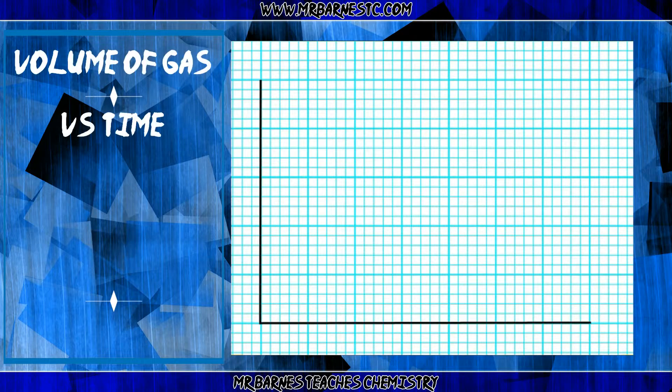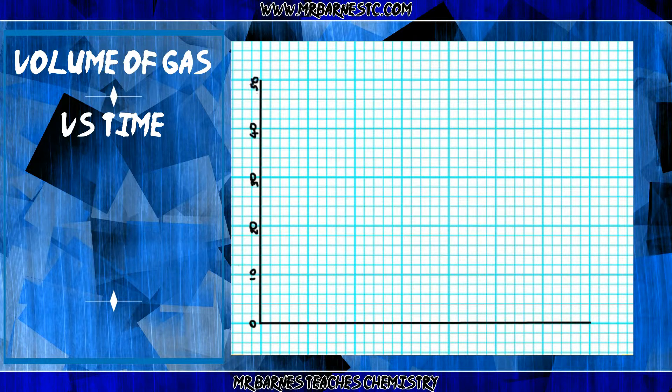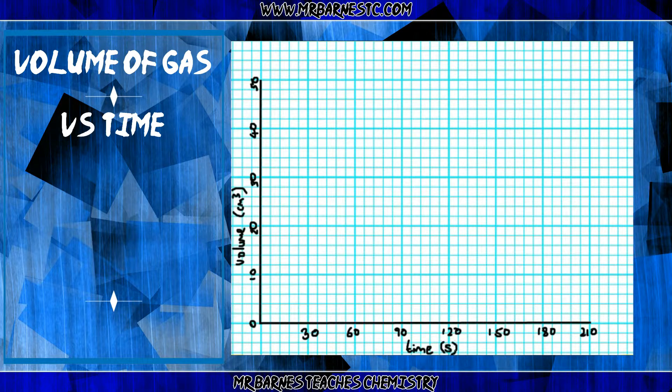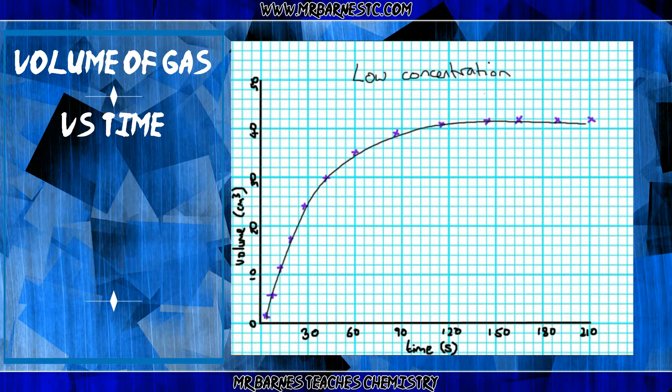I'm going to start off with a graph looking at the volume of a gas produced when I have a low concentration of reactants. As you can see here, I've got the volume on the left hand side going up and I've got the time along the bottom.